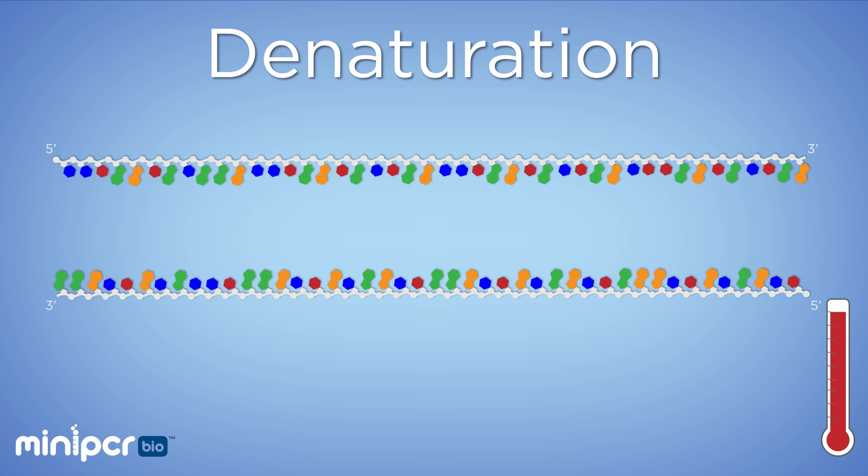After an initial longer denaturation to start off the PCR, each cycle requires a shorter denaturation, which can be as little as 10 seconds, but is often between 30 seconds and 1 minute.